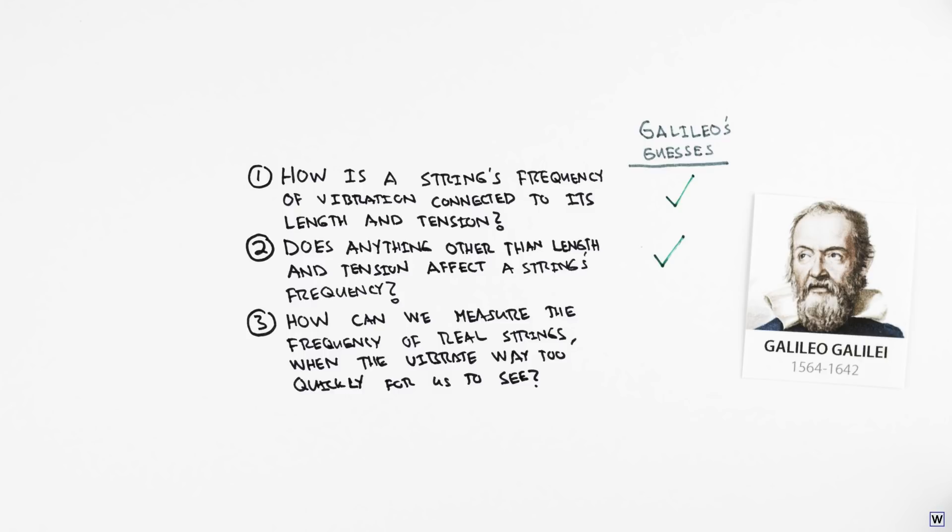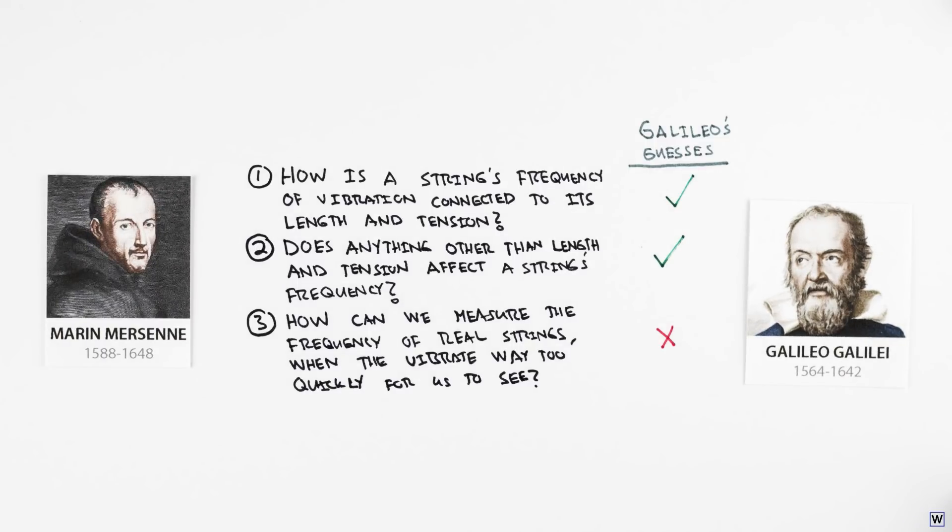But fortunately for us, Galileo was wrong. Within 30 years of Galileo's work, the French priest and scientist Marin Mersenne did measure the frequency of vibrating strings, and was able to experimentally confirm Galileo's guesses. Mersenne was even able to use his methods to compute the frequency of pipe organ notes with around 90% accuracy.